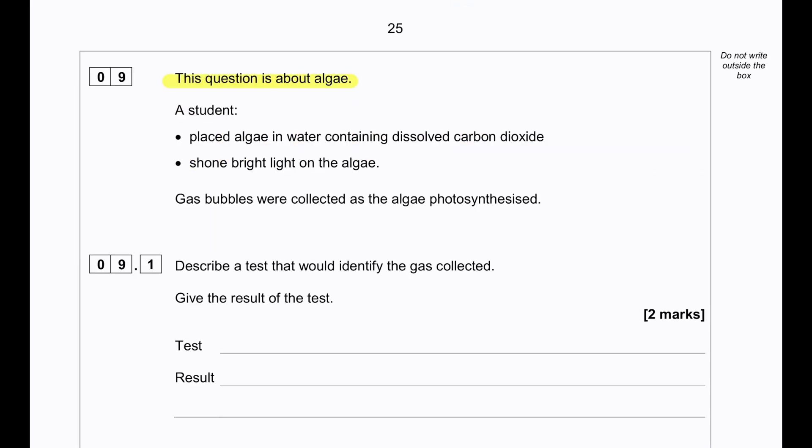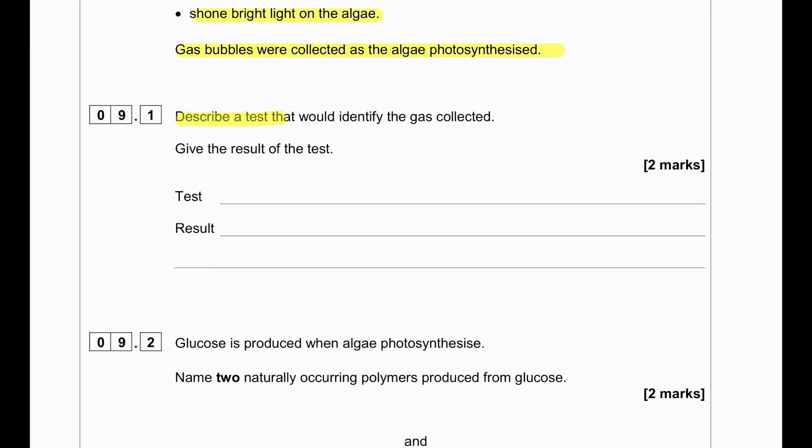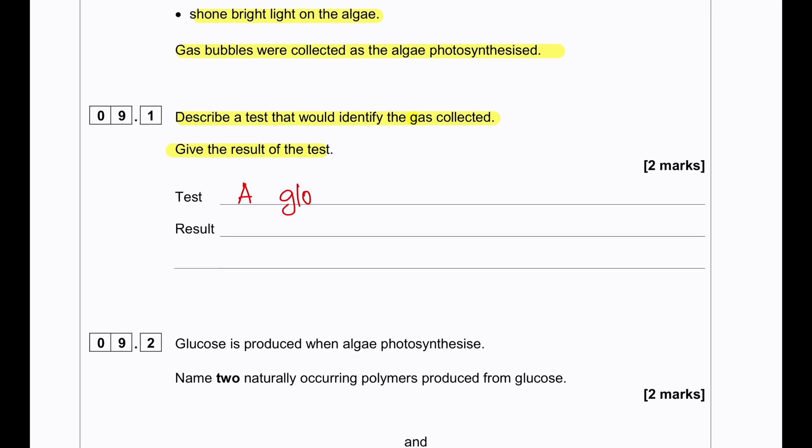This question is about algae. A student placed algae in water containing dissolved carbon dioxide and shone bright light on the algae. Gas bubbles were collected as the algae photosynthesized. Describe the test that would identify the gas that is collected. Give the result of the test. So when we have photosynthesis, we produce oxygen. So in this case, the test will be to use a glowing splint and the result will be the glowing splint will relight because of the oxygen.